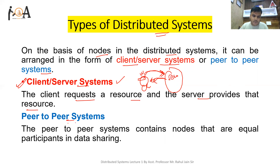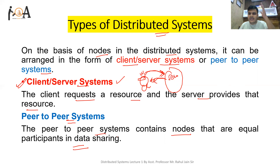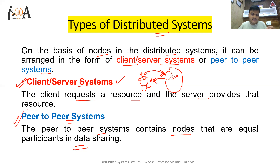In a peer-to-peer system, all nodes are equal participants in data sharing. For example, if there are five systems, the work is equally divided among them. Think of completing a project with a group of four members — all members divide the work equally. That is an example of a peer-to-peer system. So on the basis of nodes in a distributed system, it can be divided into client-server or peer-to-peer systems.